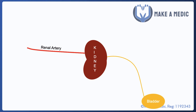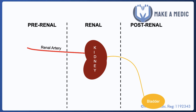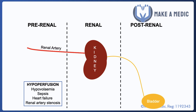Regarding the causes of AKI, it can be described as either pre-renal, renal or post-renal. Pre-renal causes are generally driven by hypoperfusion — a reduction in the blood flow through the kidneys. That can occur due to a number of different reasons: hypovolemia, sepsis in which total peripheral resistance goes down and the perfusion of organs decreases, heart failure, and also renal artery stenosis.